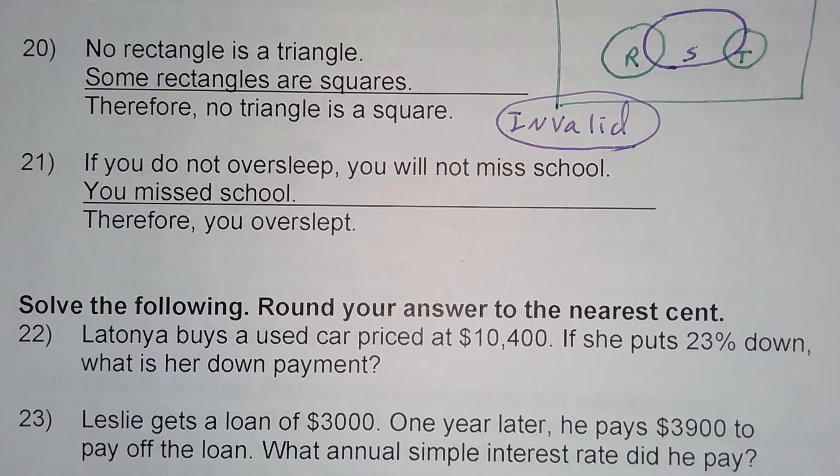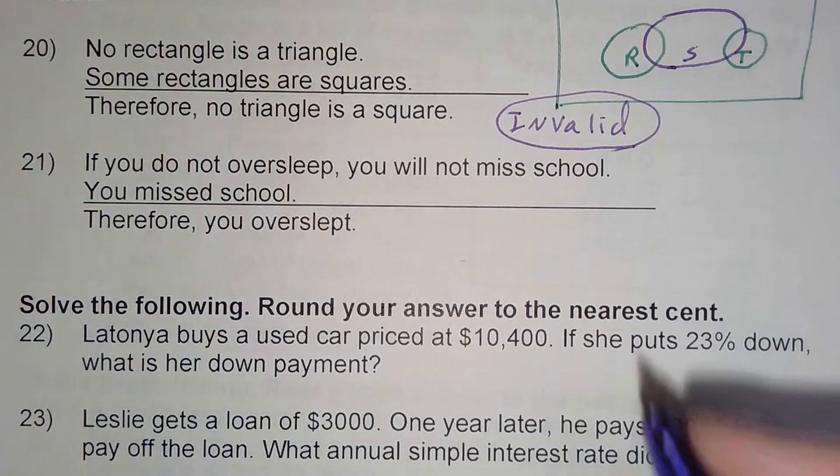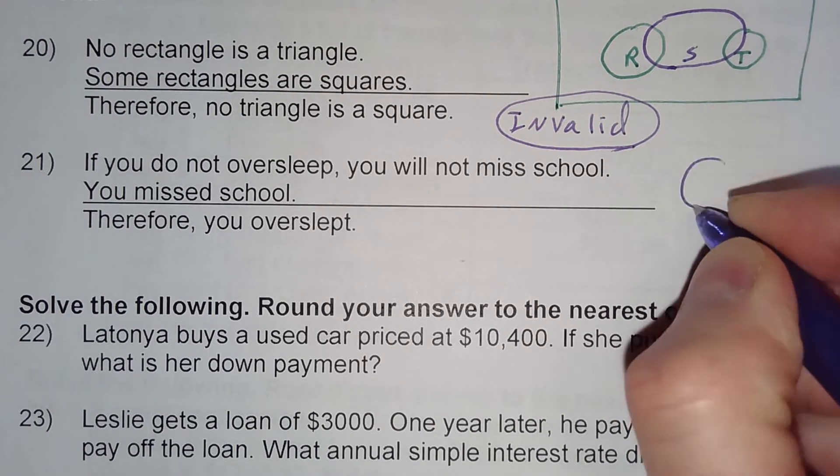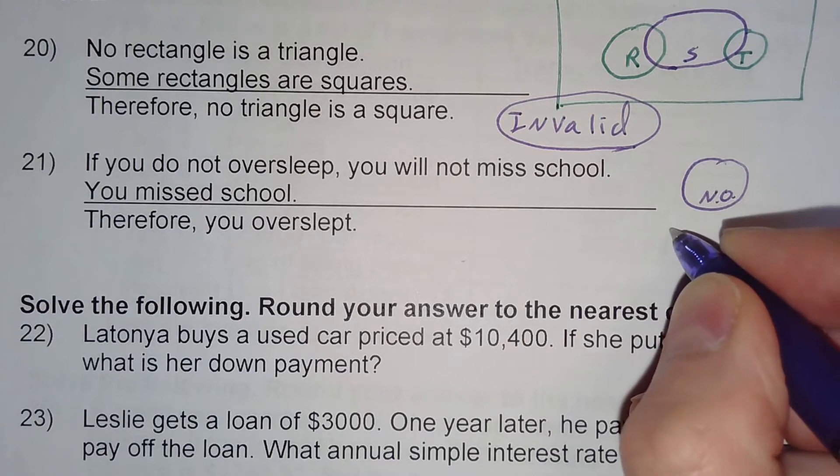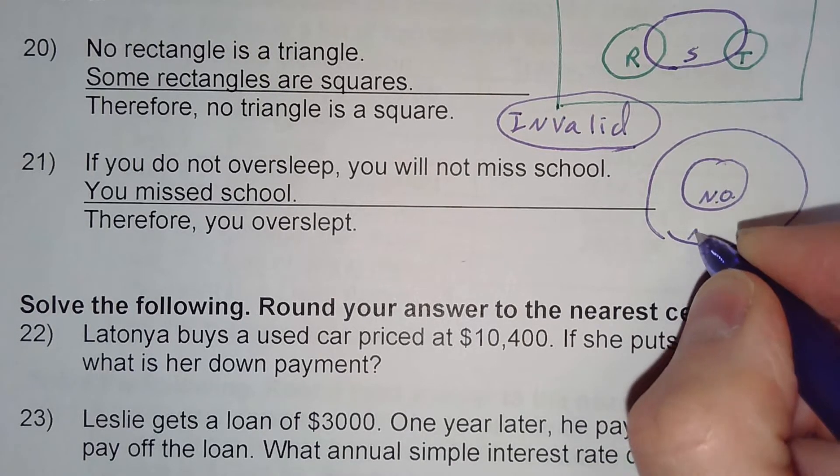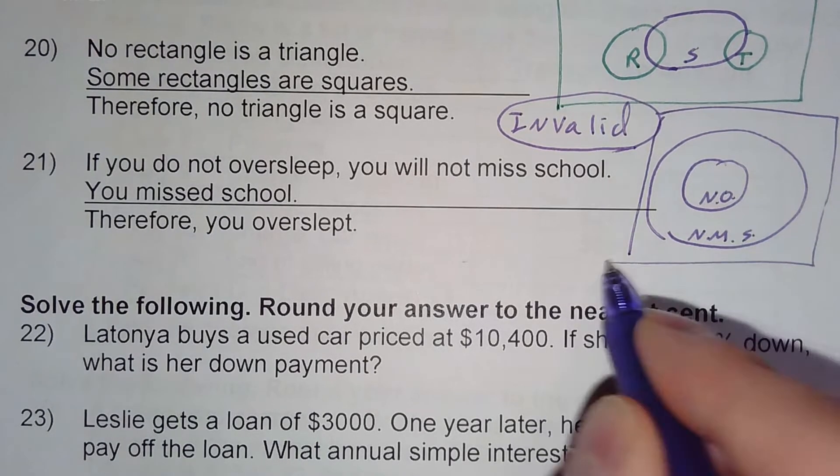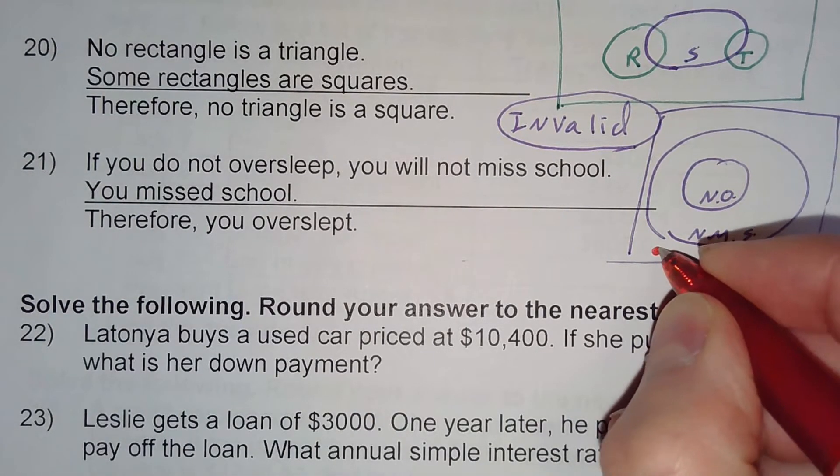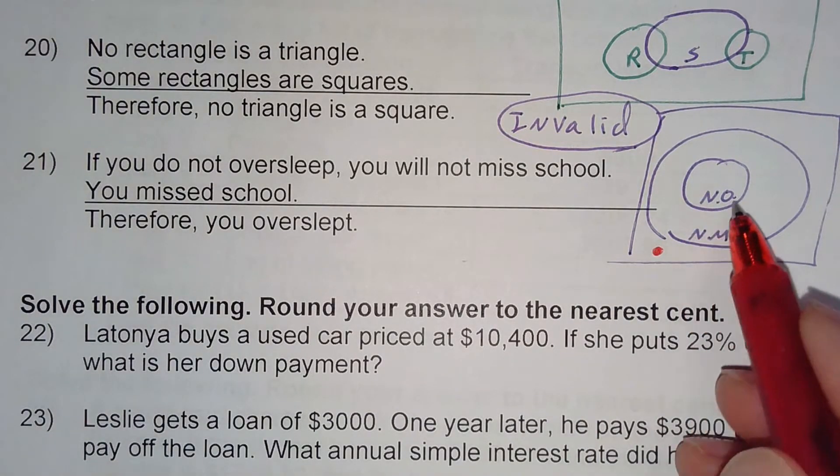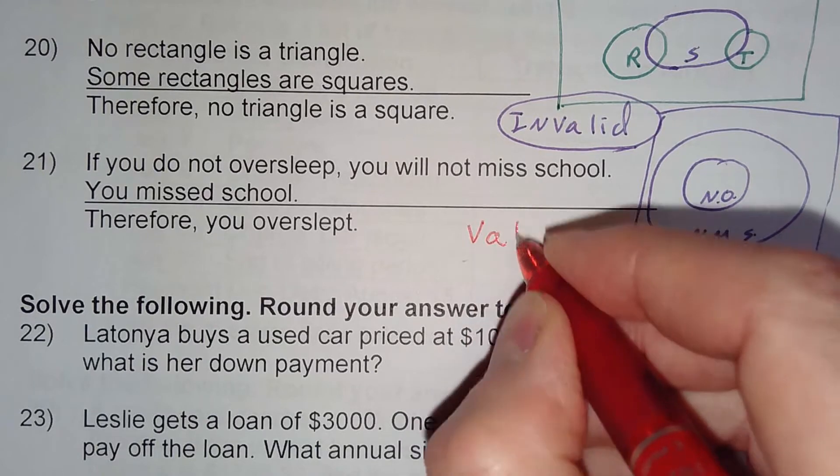All right, so now on page 226, looking at number 21. We're still using Euler diagrams to determine where each argument is valid or invalid. If you do not oversleep, you will not miss school. Okay, so not oversleep, not miss school. That's just diagramming the first sentence. The second sentence says you missed school, so it means you have to be out here somewhere. And if you're outside of not oversleeping, that means you overslept. So a conclusion has to follow. This would be a valid argument.